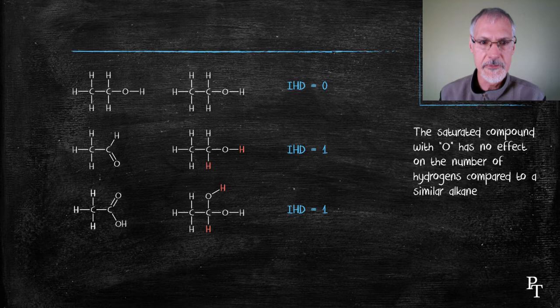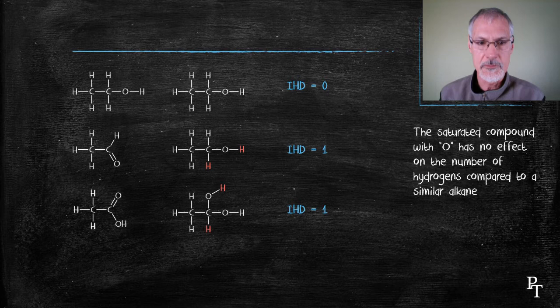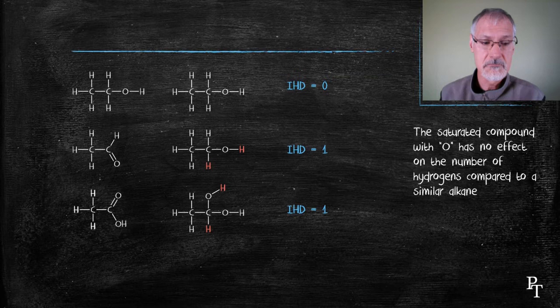Now, just a little note here that all three of these compounds have essentially six hydrogens in them. That's because ethane has six hydrogens. The presence of oxygens doesn't alter the number of hydrogens.